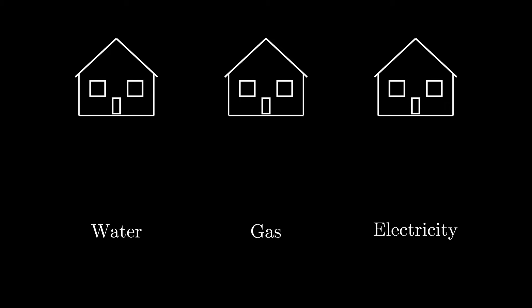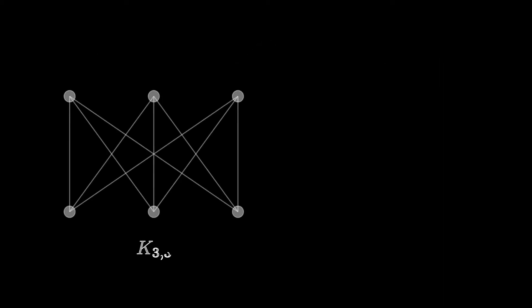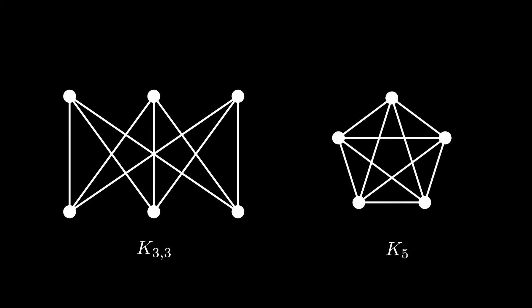And since we're not able to draw every edge without them crossing, then we call this graph nonplanar. In fact, there are only really two graphs that we need to worry about being nonplanar. That's K33 and this other graph, K5.